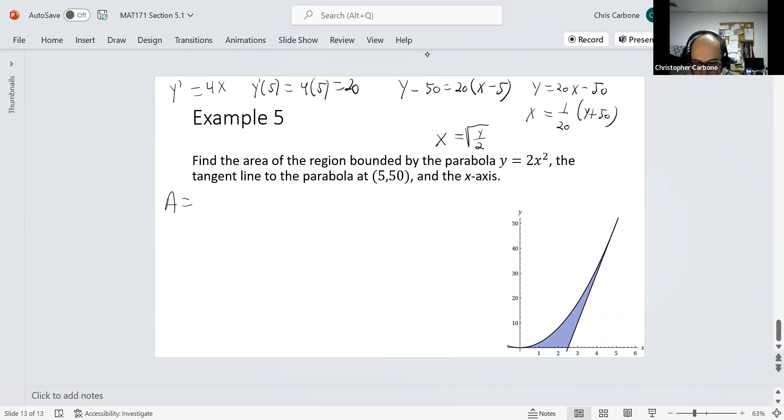The area we are going to use for this, we are going to use between 0 and 50, since we have the tangent line being 5 comma 50, that should be where they intersect. And this will be 1/20 times y plus 50 minus the square root of y over 2 dy. This is 1/40 times y squared plus 5/2 times y minus 4/3 times 1/2 of y to the 3/2 power, and this would be evaluated between 0 and 50.